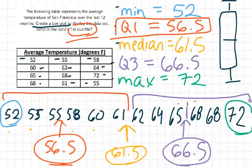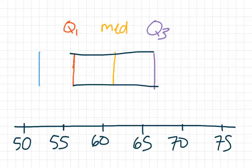The maximum is 72. So let's plot 72 where it goes right here. And then we just connect these whiskers to the box. And that is our box plot.